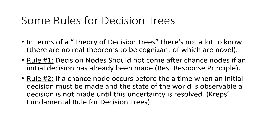In terms of the theory of decision trees, there's not really a whole lot to know — no novel theorems to be cognizant of. There are two rules to talk about. The first rule is that decision nodes should not come after chance nodes if an initial decision has already been made. This is known as the best response principle. If a decision node comes after a chance node when a decision has already been made, our agent will just best respond there, and you will end up trimming the tree a bit more.